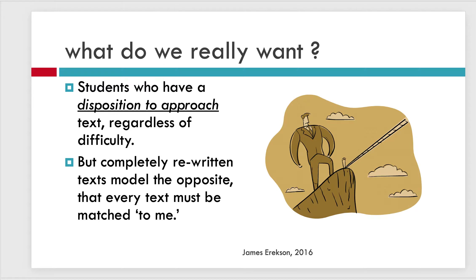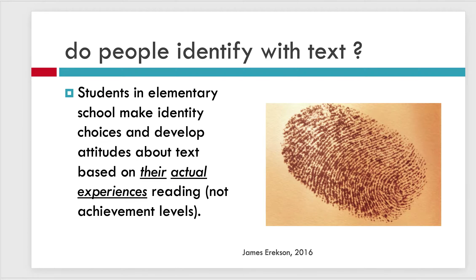But finding completely rewritten texts tells kids the opposite. Anytime we say we have to find all grade-level text for our social studies and so on, you want something in the ballpark, but you can't expect texts to be rewritten down to somebody's level every time they want to learn something new. In elementary school kids make choices — they develop attitudes about text based on their actual experiences, not on achievement levels. So we want to help them have some successful experience.